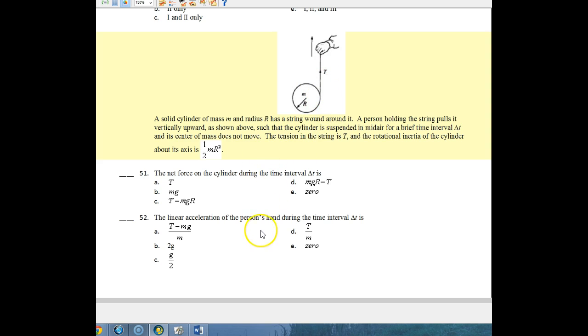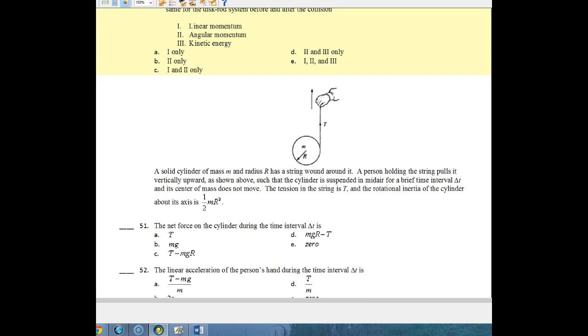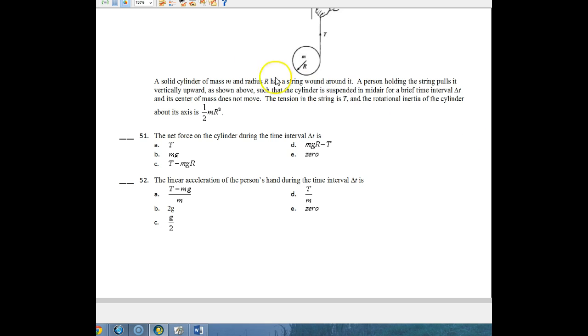So these next two questions are really difficult, and they're difficult because there's something that you have to know about them in order to solve them. You have a solid cylinder of mass M, radius R, and a string wound around it. The person holding the string pulls vertically upward such that the cylinder is suspended in midair for a brief time. The tension in the string is T, and the rotational inertia of the cylinder about its axis is one-half MR squared.